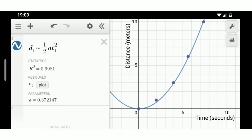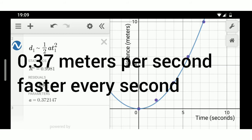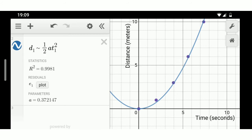What that means is that every second I was going faster by 0.37 meters per second. Put it another way, I was increasing my speed by 0.37 meters per second, every second. 0.37 meters per second, per second.